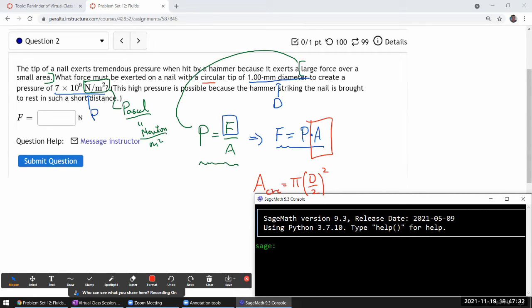Okay, there it is. So let me plug in the numbers. I have pressure, 7 times 10 to the power of 9 in the pressure unit, times the area, which should be pi, times the diameter, 1.00 millimeter. Oh, I need to convert that to meters so that the units will work out properly.